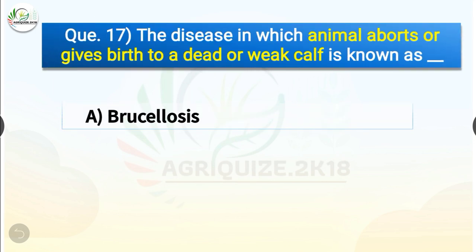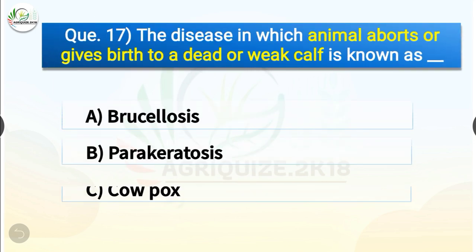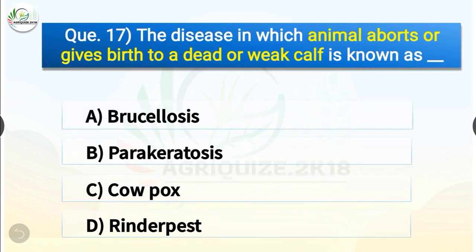Question number 17. The disease in which an animal aborts or gives birth to a dead or weak calf is known as dash. The options are brucellosis, parakeratosis, cowpox or rinderpest. The correct answer is option A, brucellosis. So the disease in which an animal aborts or gives birth to a dead or weak calf is known as brucellosis.